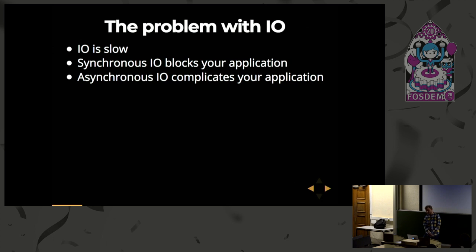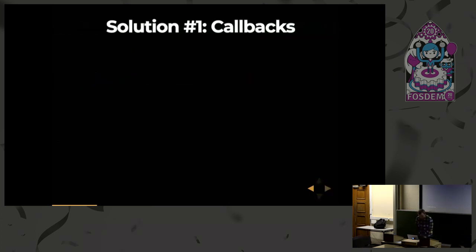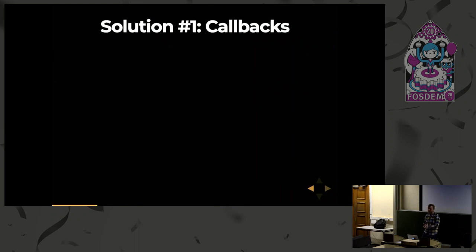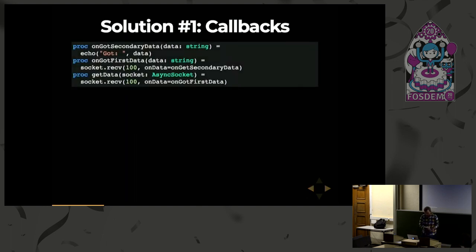Asynchronous I/O, on the other hand, solves this by offering a mechanism which allows you to check whether an I/O operation has completed repeatedly. But there's no way to do this in a simple way. So what can we do? How do you manage thousands of I/O operations with many different actions to be taken when each operation completes? The most basic solution is to use callbacks. But as many of you likely know, callbacks become very difficult to manage.